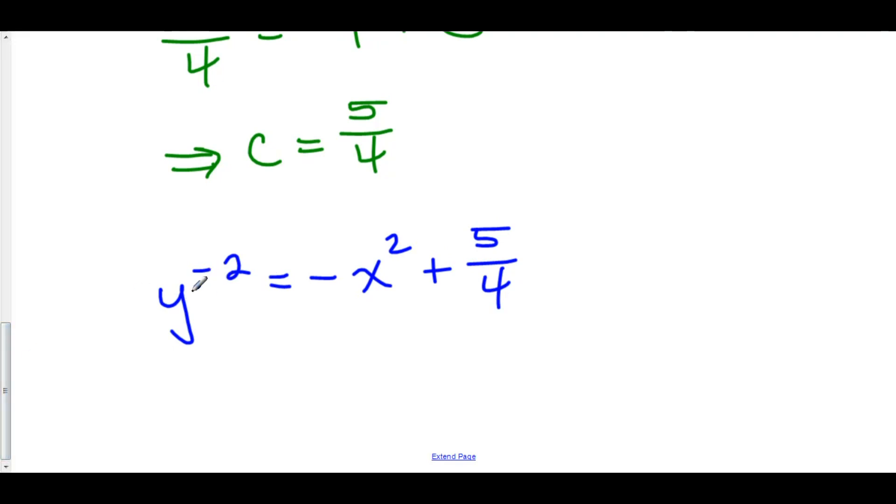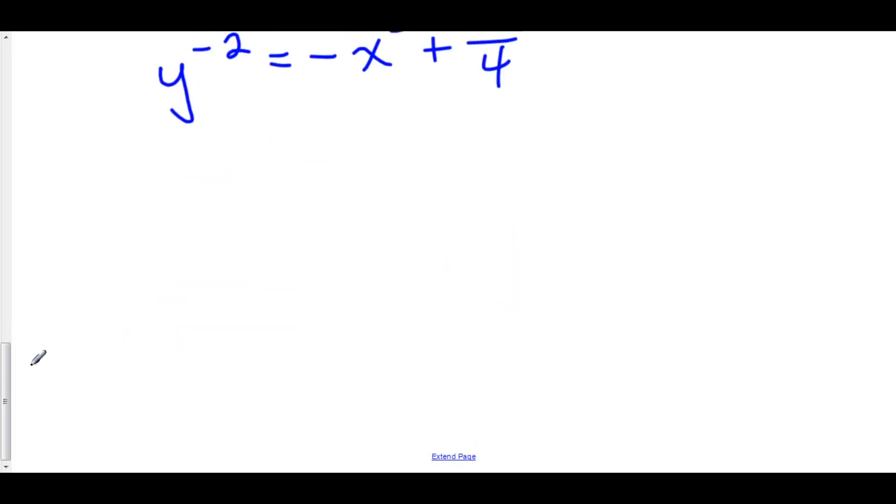Now a lot of times to get rid of the negative 2 in the exponent you might want to multiply or raise both sides to the power of negative 1 half. But I'll definitely advise against that. Let's flip it and let's do this all by hand.